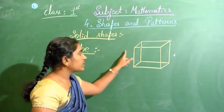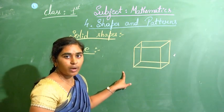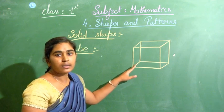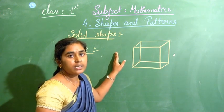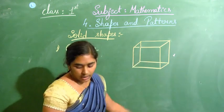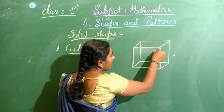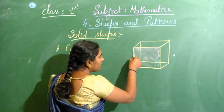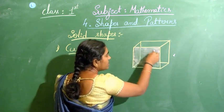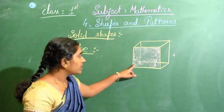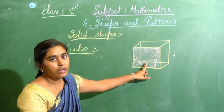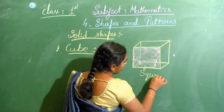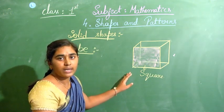What I have done: I took one square, stretched it, and joined the corners — so this is called a cube. A cube is originated from a square. One face of a cube will look like a square — the front side of a cube looks like a square.